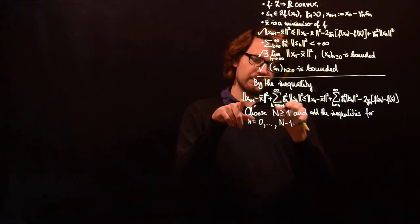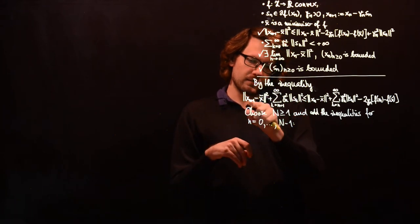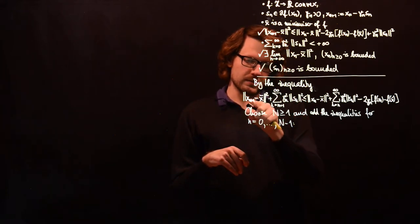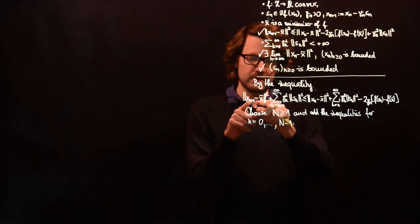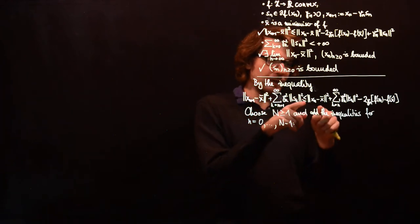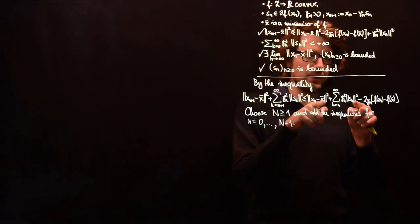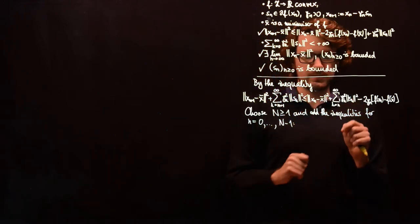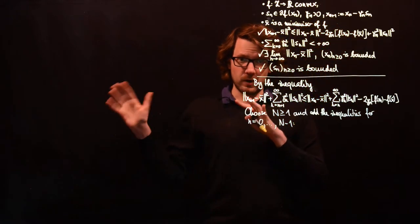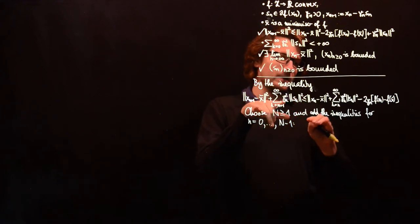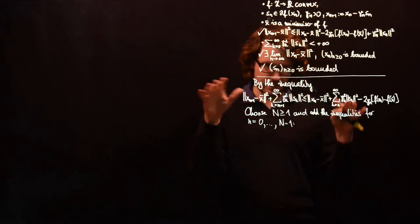When we add the inequalities for n from 0 to capital N minus 1, the left-hand side telescopes starting from n+1 = 1, 2, 3 up to capital N, and the right-hand side runs from n = 0 to capital N minus 1. Therefore all the terms for n from 1 to capital N minus 1 appear on both sides and cancel out.